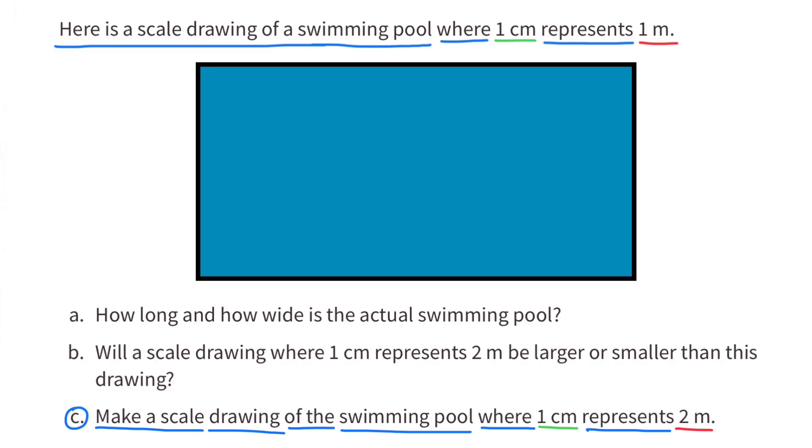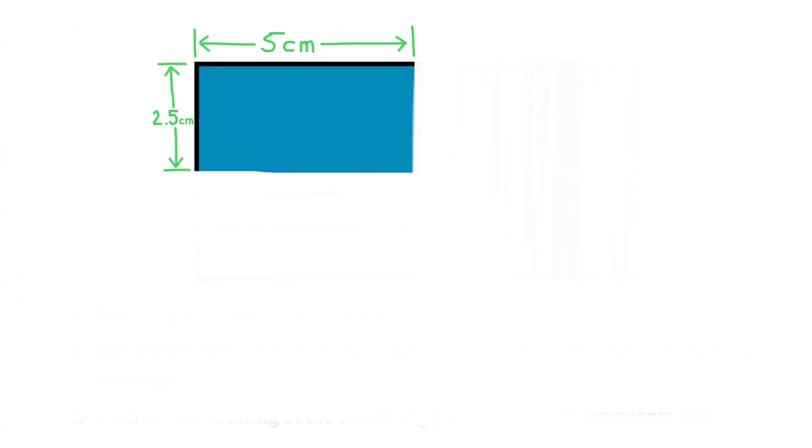Part c: make a scale drawing of the swimming pool where one centimeter represents two meters. This is the scale drawing used when one centimeter represented one meter. I need to make adjustments so that one centimeter represents two meters. The length and the width will each be half as long, so the new scale drawing will be five centimeters long and two and a half centimeters wide.